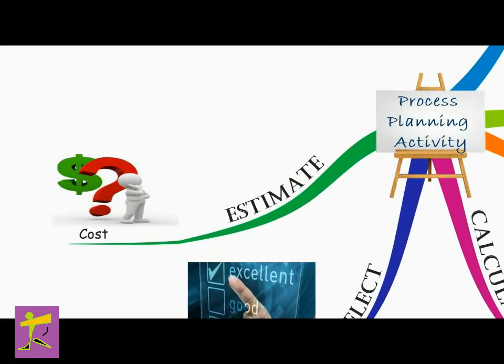The next step in process planning is cost estimating. Cost estimating is the process of determining the probable cost of the product before the start of its manufacture. With the available cost and time data, the materials cost, labor cost, and overheads are estimated. From this, the unit cost and the profitability of the product can be determined. The cost data will influence the process planner in decisions on what materials to use, the manufacturing process to be used, the batch size to be used, and whether to make or buy a component.